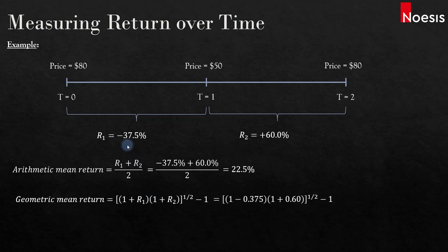So we take 1 plus negative 0.375, multiply by 1 plus 0.6, and raise it to the power of 1 over 2 minus 1. The product of these two equals 1, and 1 to the power of 1 over 2 is also 1. So 1 minus 1 equals 0%. We seem to be getting two different results here.